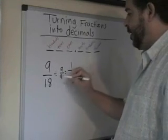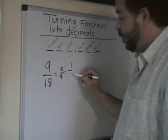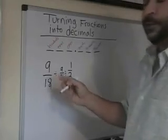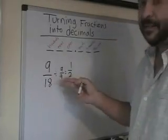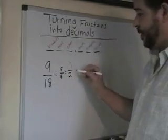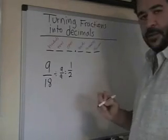Nine divided by nine is one. Eighteen divided by nine is two. So if you weren't able to tell right off the bat that this was one half, there you have it. One half.